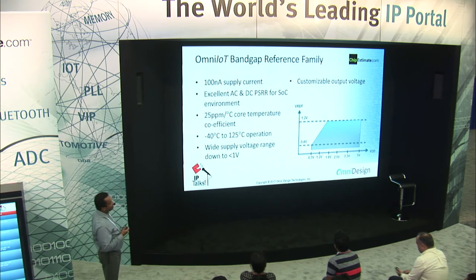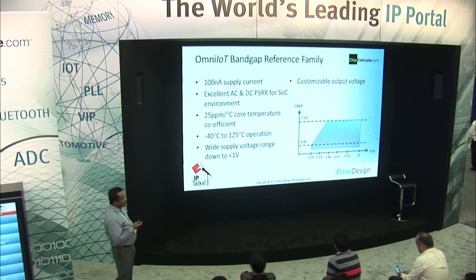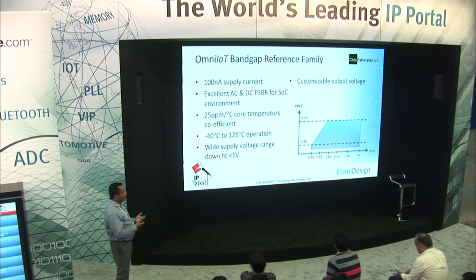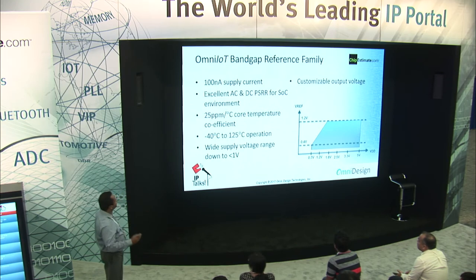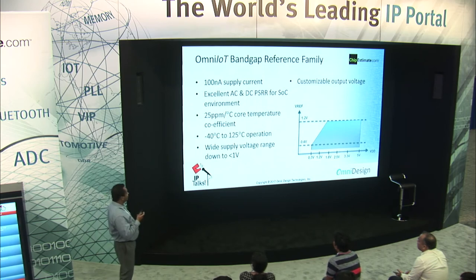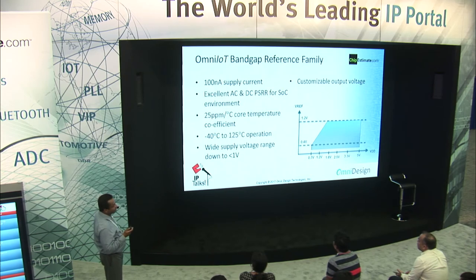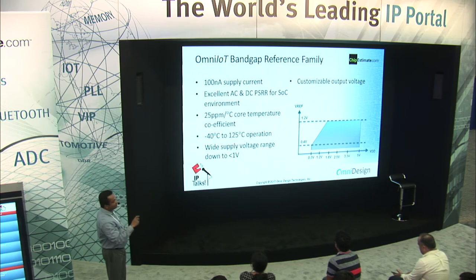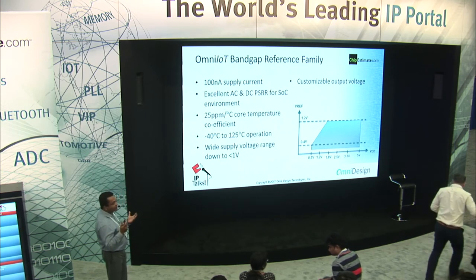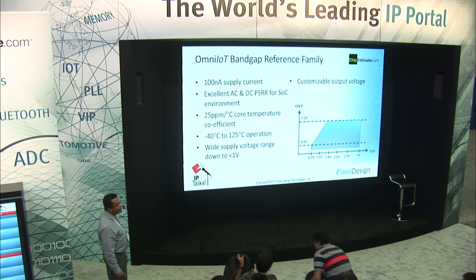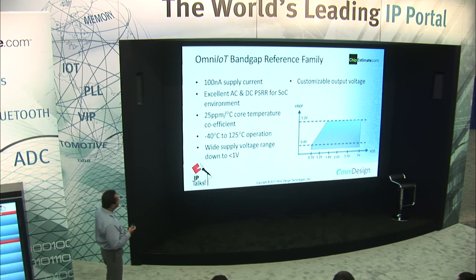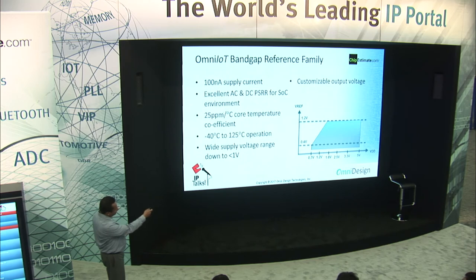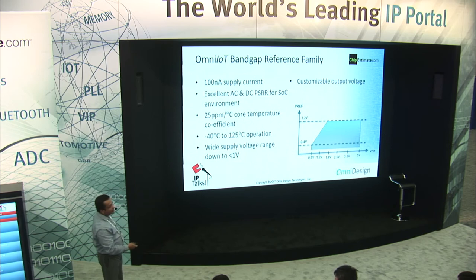Here's an example from our bandgap reference family. Every chip needs the bandgap reference because the accuracy of all your ADCs and signal processing is ultimately determined by that voltage reference. This is one of those things which has to be on all the time, even when everything else is sleeping. Our bandgap reference family targets 100 nanoampere supply current, excellent PSRR both AC and DC — greater than 60 dB at megahertz frequencies. You get a core temperature coefficient of 25 PPM per degree C, minus 40 to 125 C operation, and the ability to go down to below one volt, providing a reference voltage from 0.4 volts all the way up to the standard 1.2 volt bandgap.